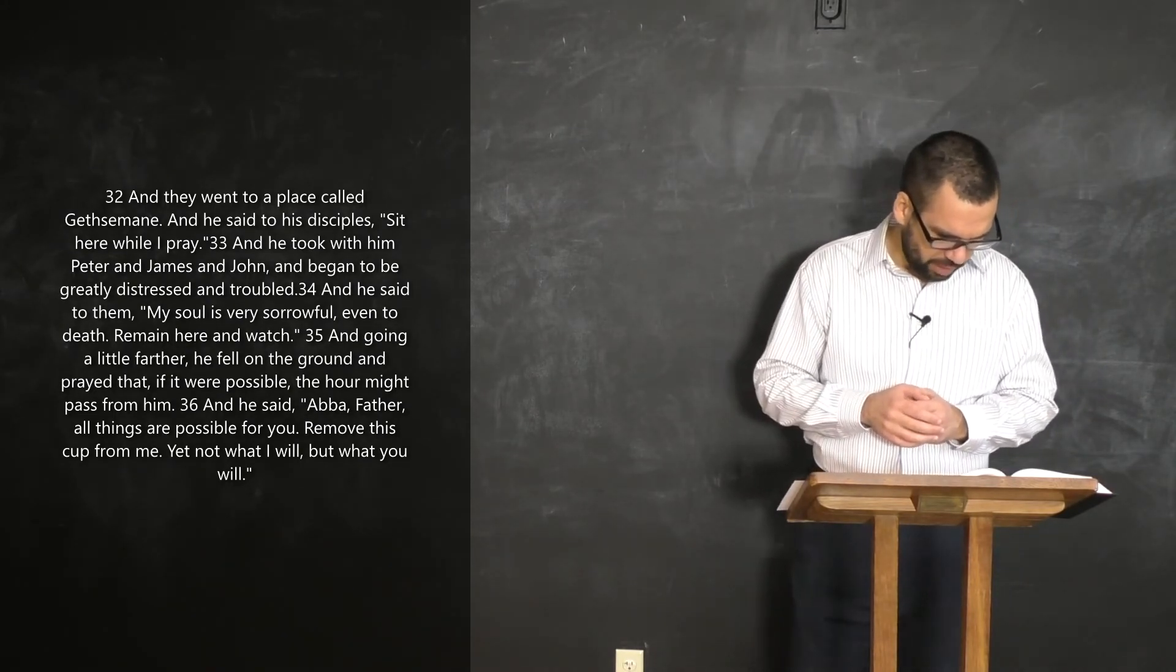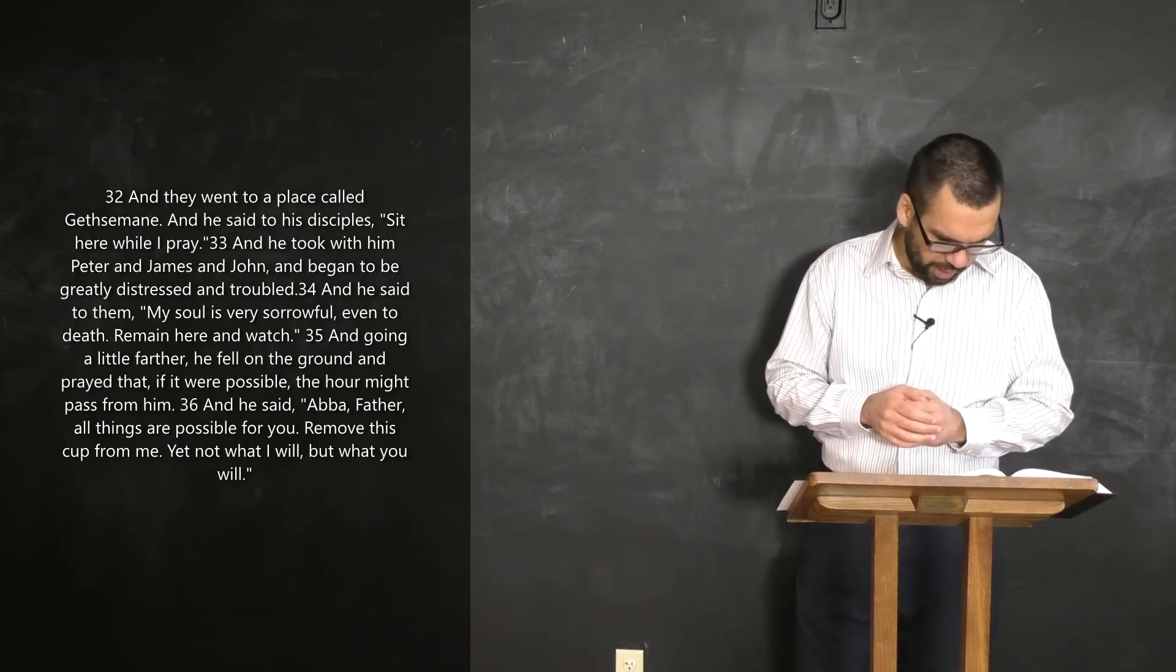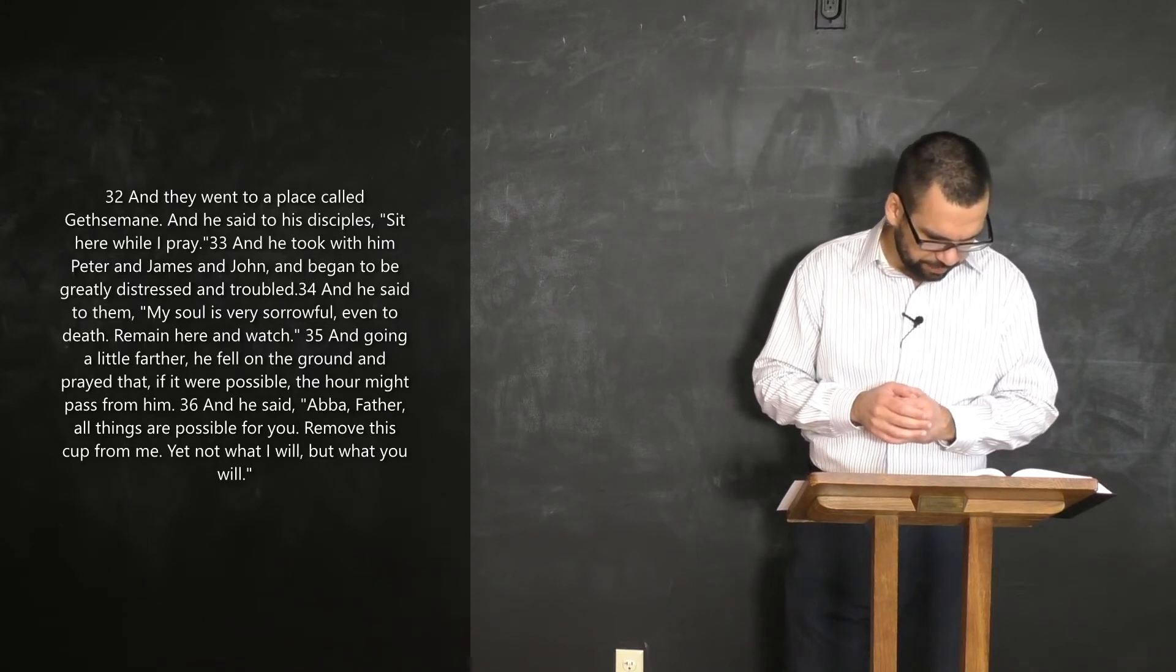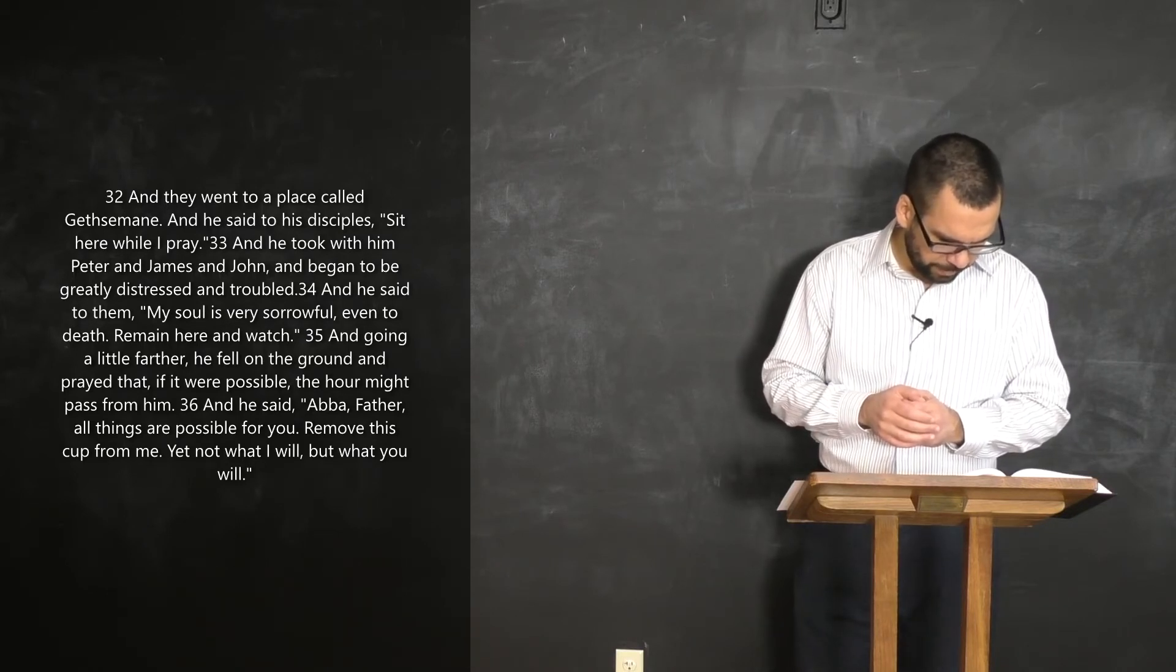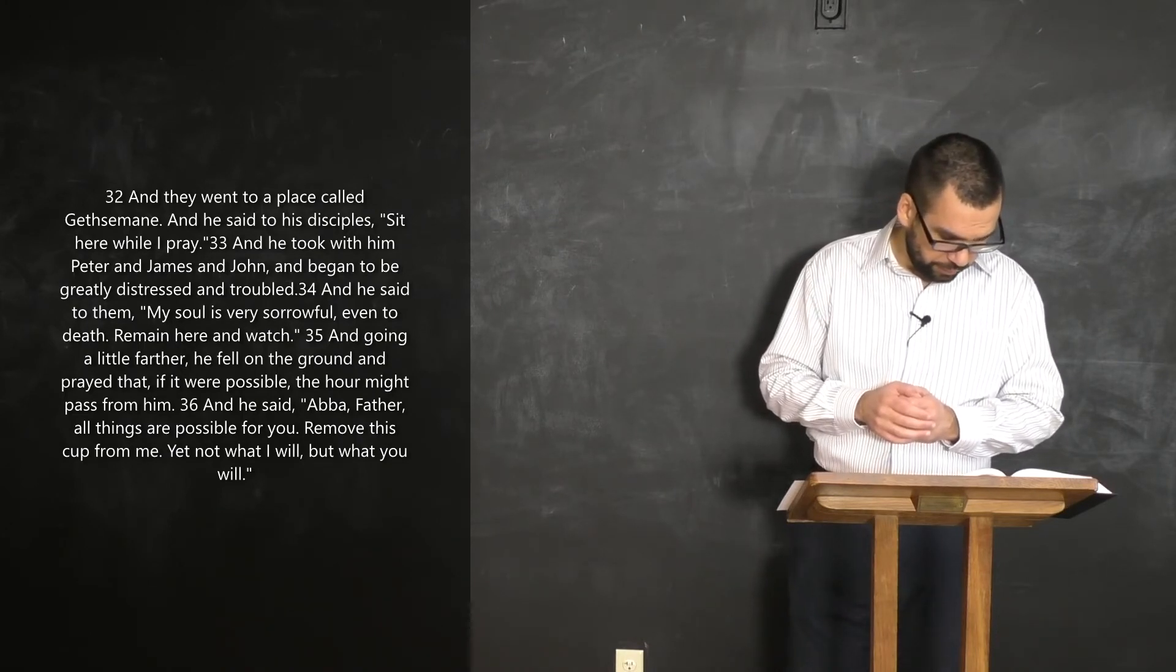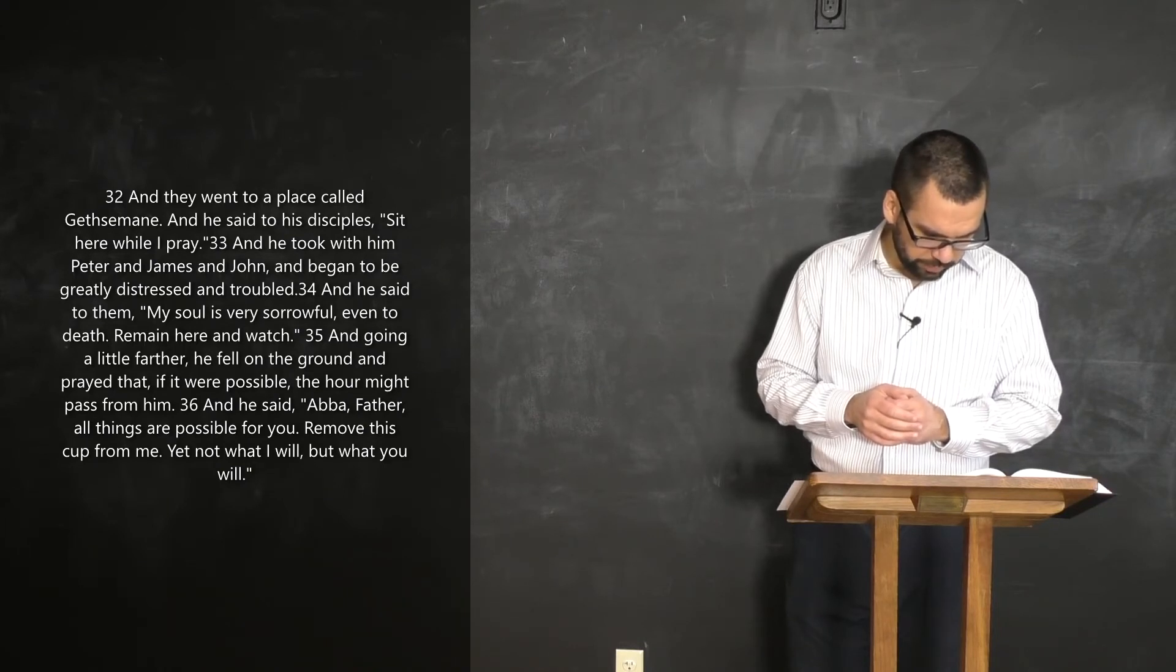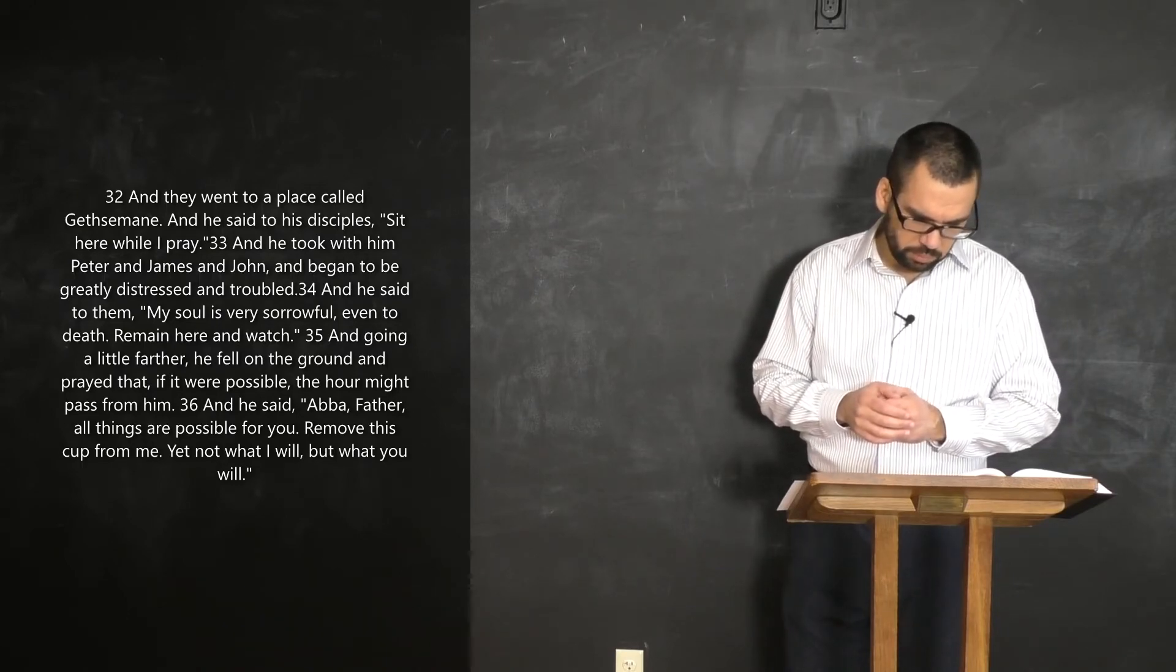He's praying to the Father. I'm going to be reading from verse 32 of Mark 14 through verse 42. There's one particular thing that I want us to take a look at. It says, And they went to a place called Gethsemane, and he said to his disciples, Sit here while I pray. And he took with him Peter and James and John and began to be greatly distressed and troubled. And he said to them, My soul is very sorrowful, even to death. Remain here and watch. And going a little further, he fell on the ground and prayed that if it were possible, the hour might pass from him. And he said, Abba, Father, all things are possible for you. Remove this cup from me. Yet not what I will, but what you will.